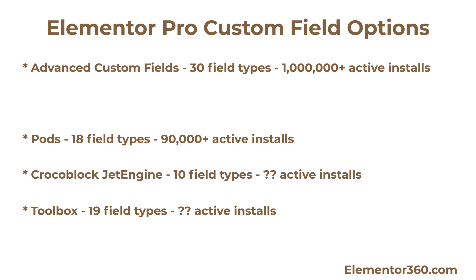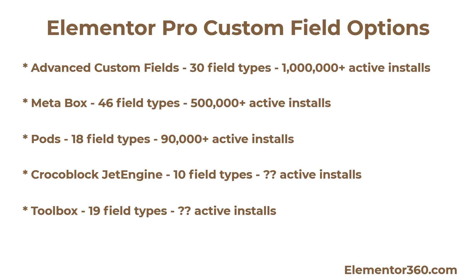JetEngine supports 10 field types and it's made specifically for Elementor. The pricing for a package that includes JetEngine goes from $69 a year for one site up to $499 for lifetime unlimited. And finally, the last option is called Metabox. Metabox is available in the WordPress plugin directory. It has over half a million active installs, 46 different field types, and premium packages ranging from $79 a year for unlimited sites to $349 lifetime unlimited.